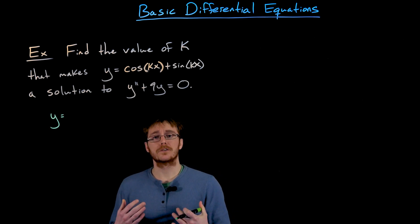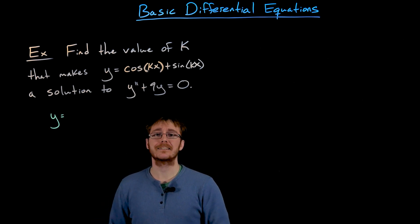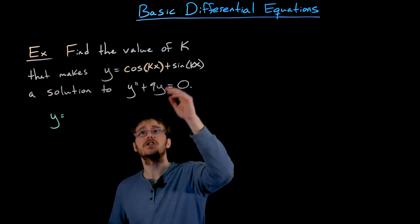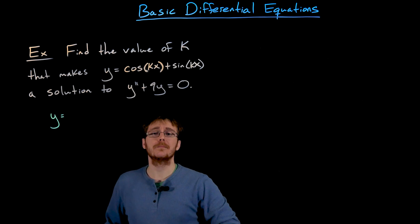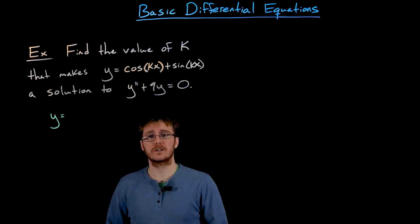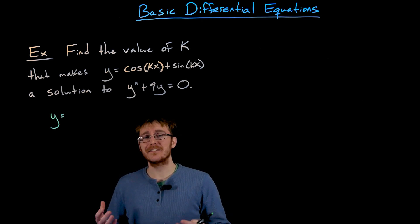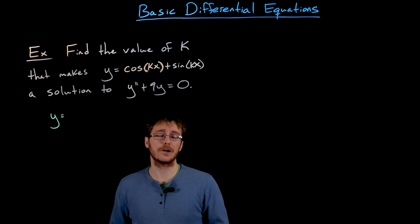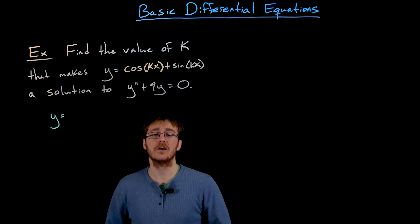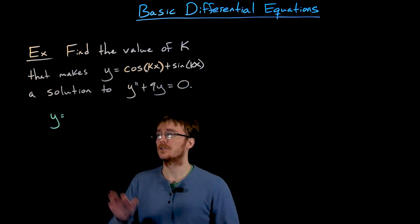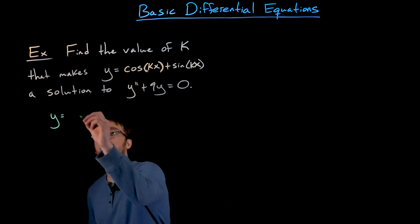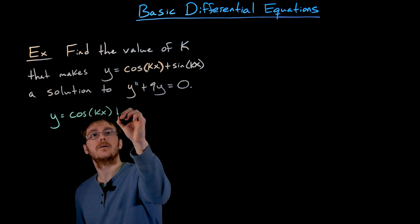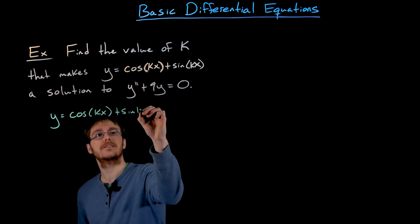In order to find the value of k that makes this a solution to our differential equation, we're going to have to find the function and its second derivative, plug them into our differential equation. That should give us some new equation that involves this unknown constant k, and hopefully we can solve that equation to find the value of k. We know that y is equal to cosine of kx plus sine of kx.